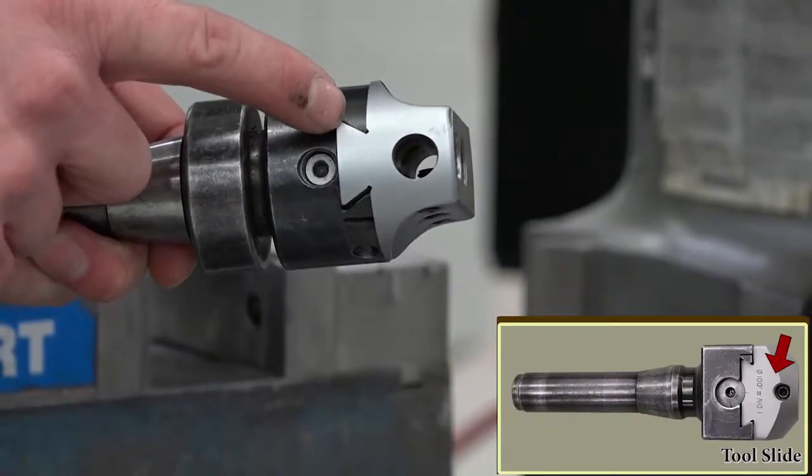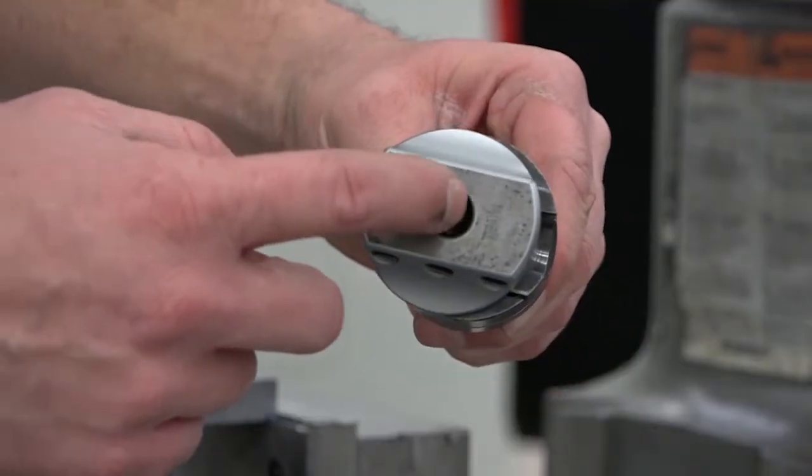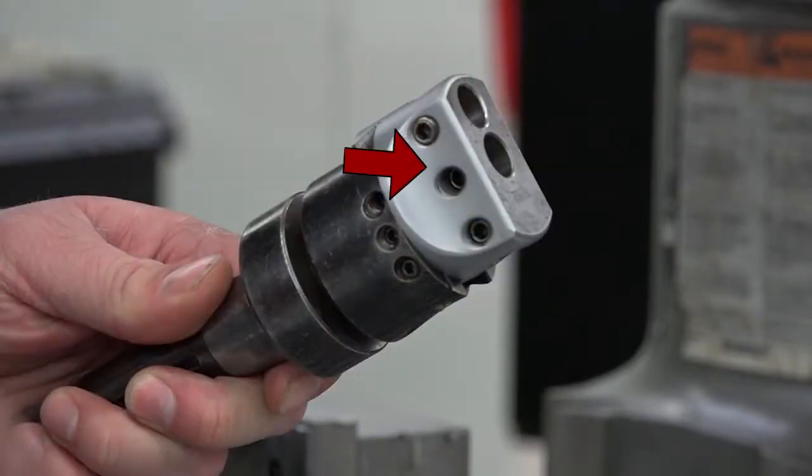The tool slide has a dovetail on one side that fits into the dovetail on the body. The other side has holes for the cutting tools. Each hole has its own set screw so you can lock the cutting tools in place.